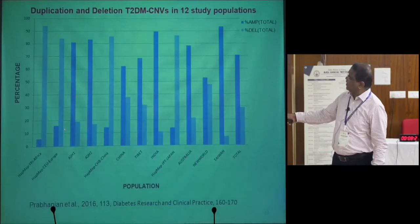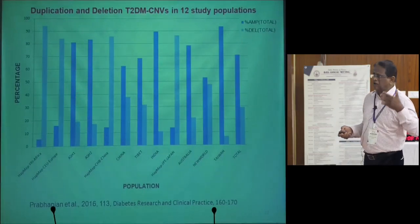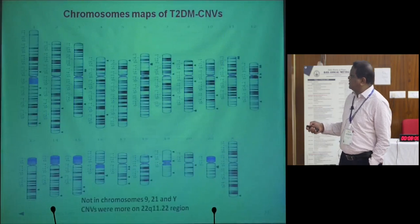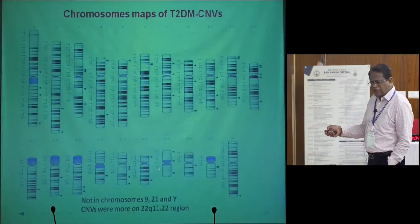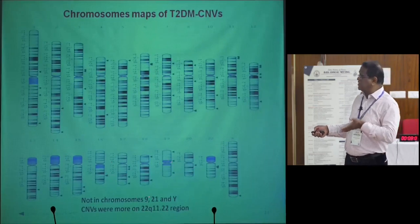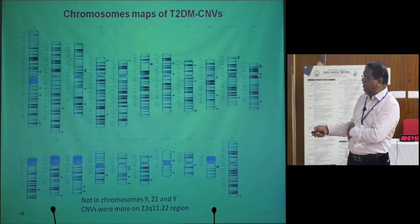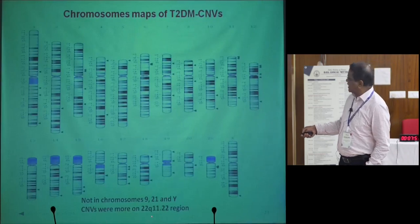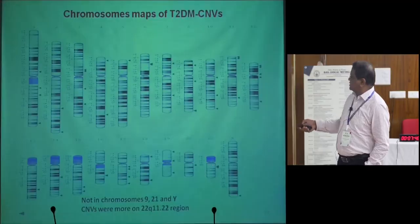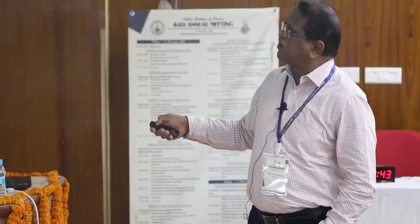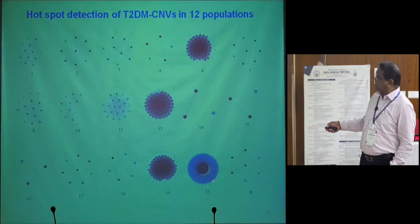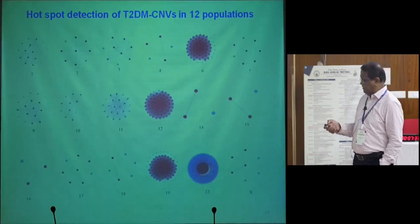Whereas in Africa, Europe, Japan, and China, more deletions were seen in type 2 diabetes genes. We also mapped the type 2 diabetes risk genes, and CNV hits on risk genes were not found on chromosomes 9, 21, and Y. There are more CNVs on chromosome 22 in this region. We analyzed CNV hot spots in type 2 diabetes risk genes and identified hotspots on chromosomes 22, 19, 12, and 6.